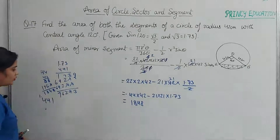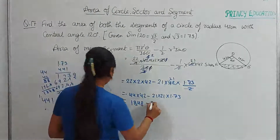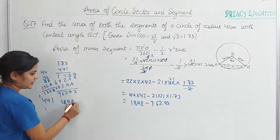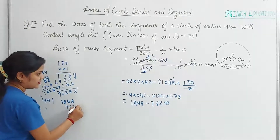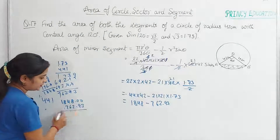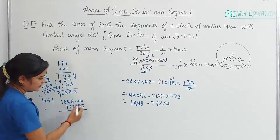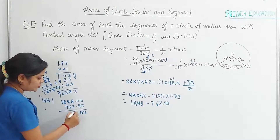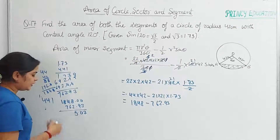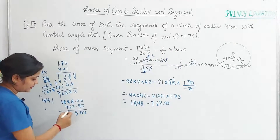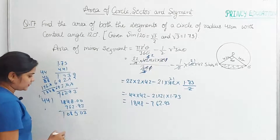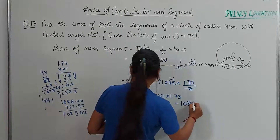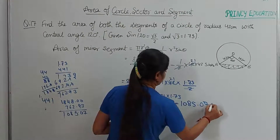So the result is 1848 minus 762.93. Taking carry: 10 minus 7 = 3, 9 minus 9 = 0, 7 minus 2 = 5, 14 minus 6 = 8, final subtraction gives us 1085.07 centimeter square.